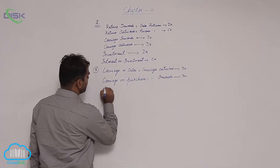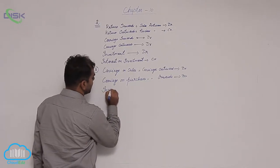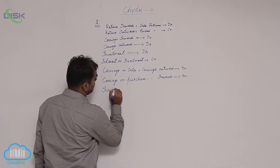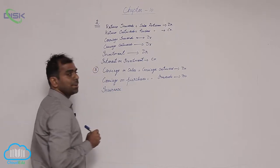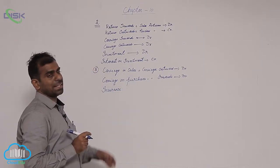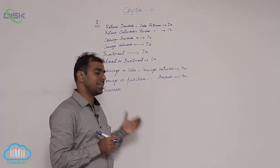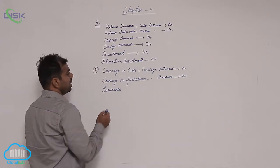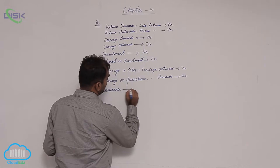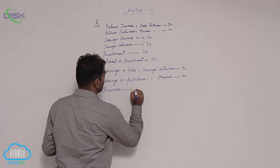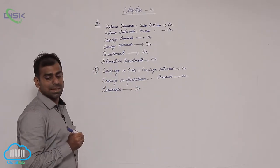Next, we have insurance. Insurance premium is what you pay annually for getting insurance coverage for your assets. So it is an example of a nominal account expense, therefore we say it shows debit balance.